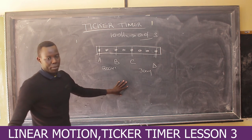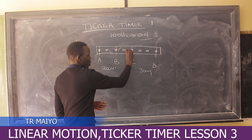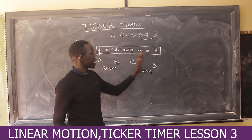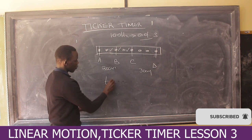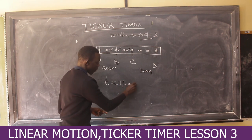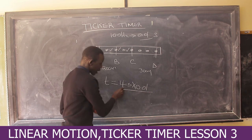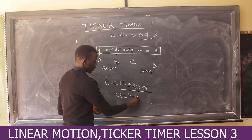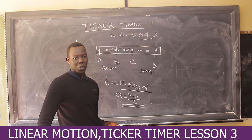To get the total time T for the acceleration formula, take half of the A-B interval (half of 2 = 1), add the spaces between B and C, then add half of the C-D interval (half of 3 = 1.5), giving 4.5 spaces total. Multiply 4.5 by 0.01 seconds to get T. Then apply the formula: a equals V minus U over T. Follow my next lesson for full calculations on the ticker timer. Thank you.